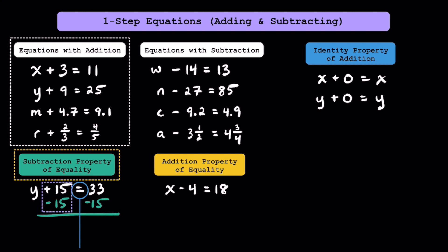Combining a positive 15 with a negative 15, you get 0. On the left side, we can write y plus 0, and on the right side we can subtract 33 minus 15 to get 18. Don't forget there's an equal sign between these. Since any value plus 0 stays the same, we can write that y is equal to 18. Going forward, we're going to use the subtraction property of equality to solve any equation that has addition.